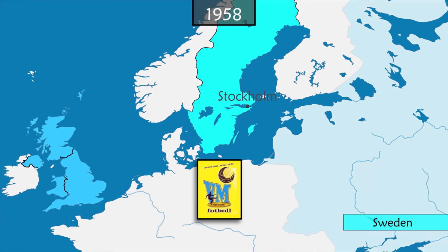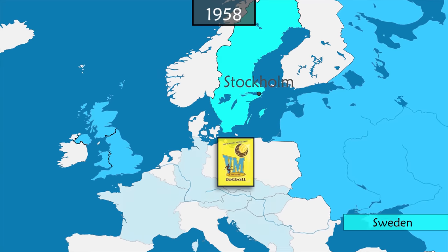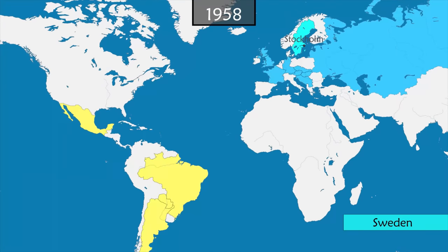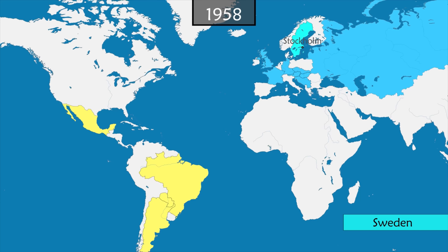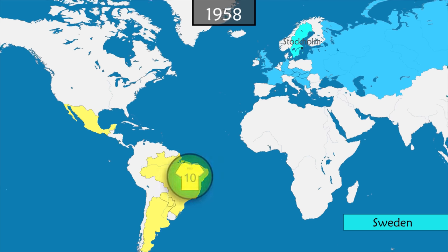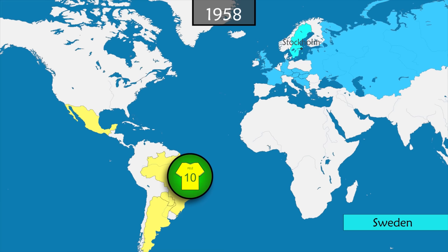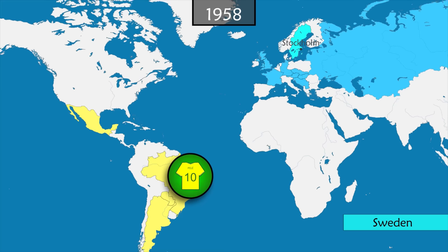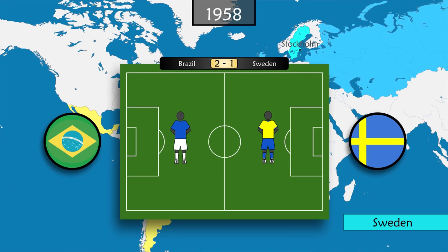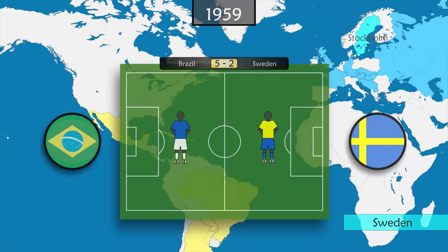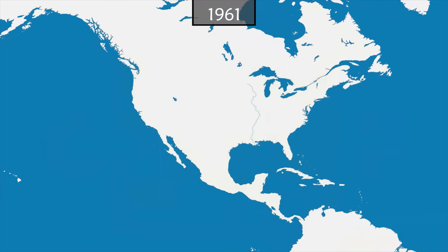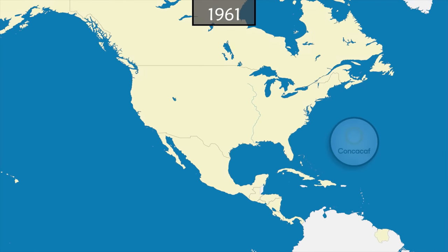In 1958, Sweden hosts the World Cup — the only time in which the four British federations participate, and the first participation of the USSR. The Brazilian team dominates thanks to its new 17-year-old star Edson Arantes do Nascimento, better known as Pelé, who will come to be known as one of the greatest footballers in history. In the final, he scores two goals against Sweden, giving Brazil its first title.